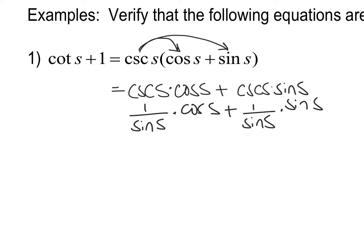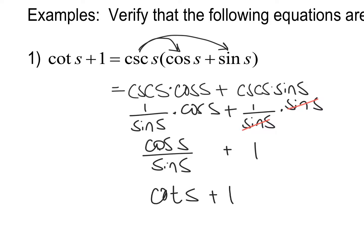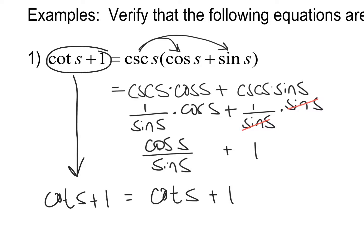Keep in mind, our goal is cotangent of s plus one. Notice that the sine of s cancels the sine of s — we're making big progress. Cancel those, and then combine everything into one fraction: cosine of s over sine of s, keep the plus sign, and now that everything's canceled on that side, I just have one hanging out. It's looking really similar to the target. Cosine over sine equals cotangent — that's something you memorize on the first day of notes. So this gives us cotangent of s plus one. Now that the left-hand side equals the right-hand side, we're done.